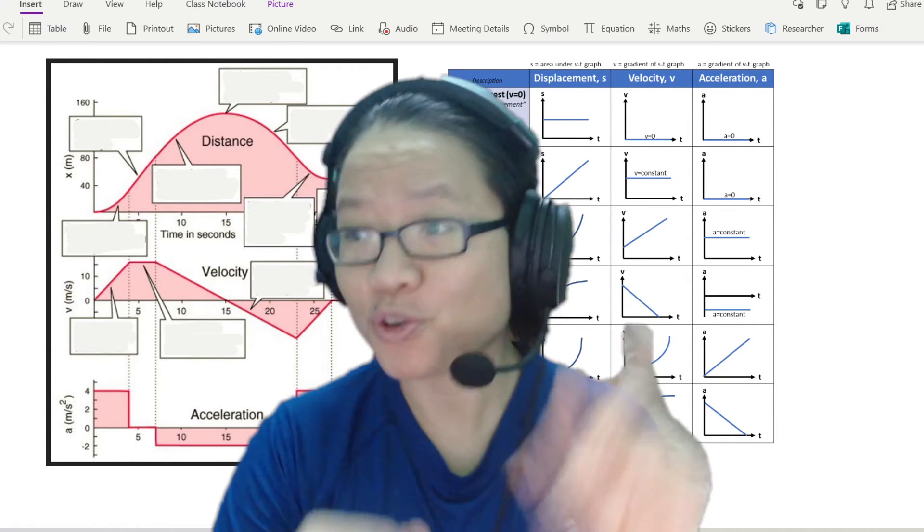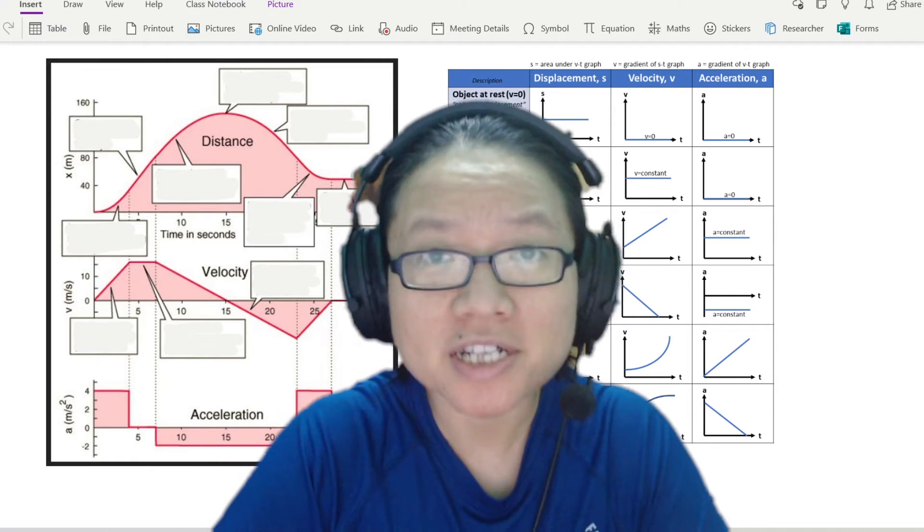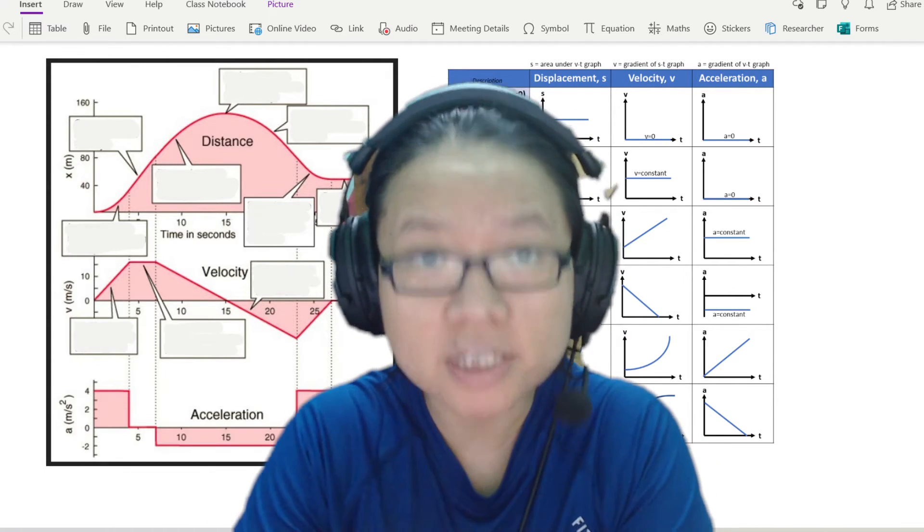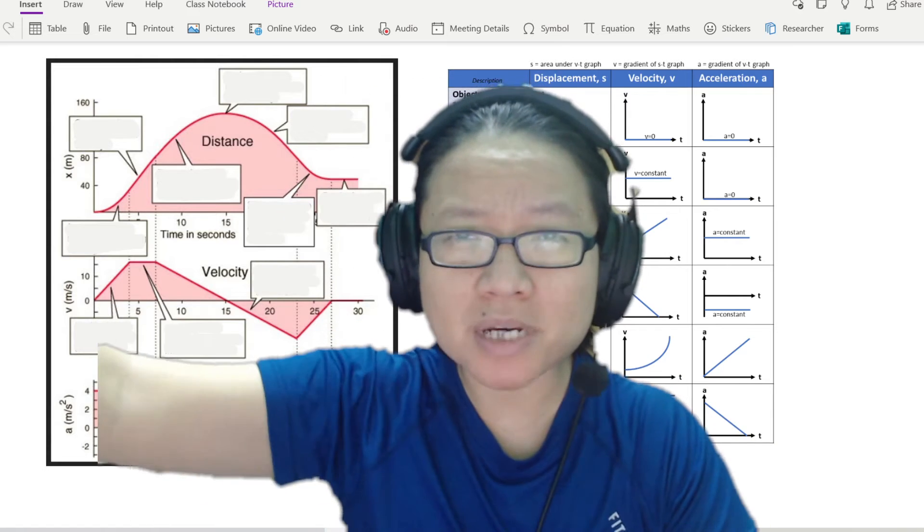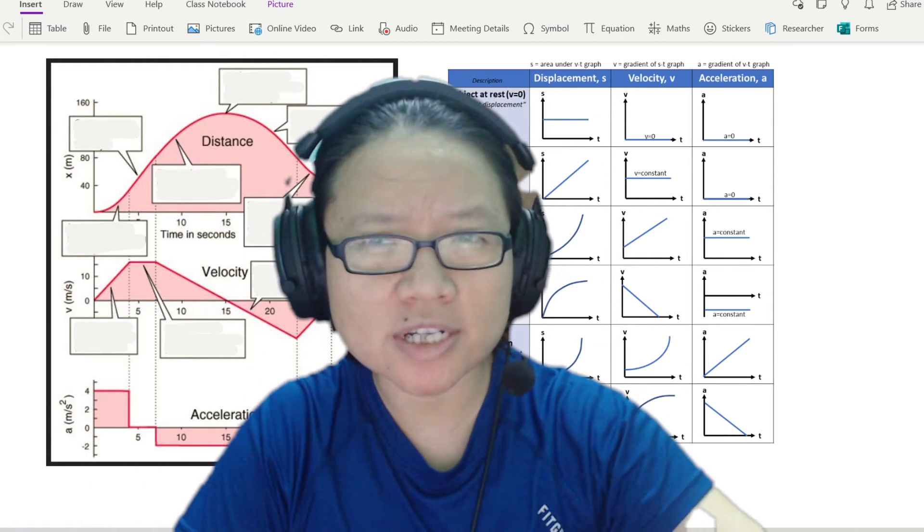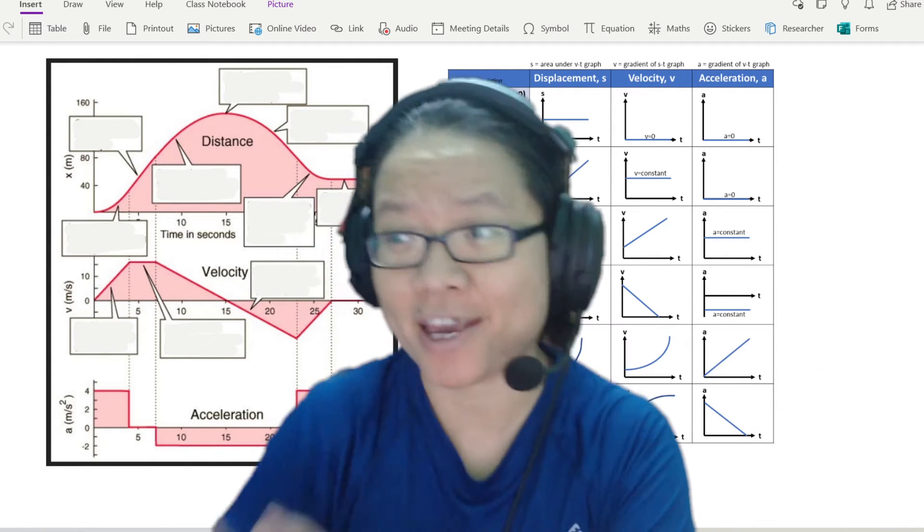So in the previous videos, you have looked at graphs like this, like this, and hopefully you have learned how to use descriptive words to describe how an object is moving, what is the displacement, what is the acceleration, and also how these graphs are linked to each other when you look at the gradient and the area.